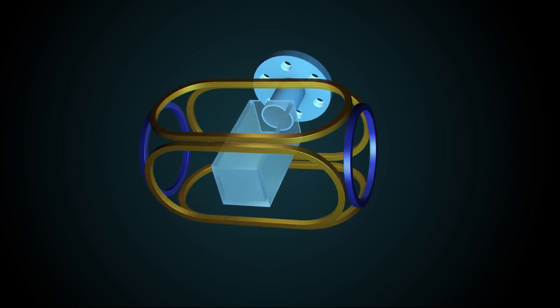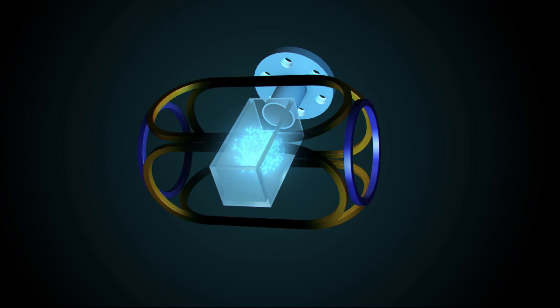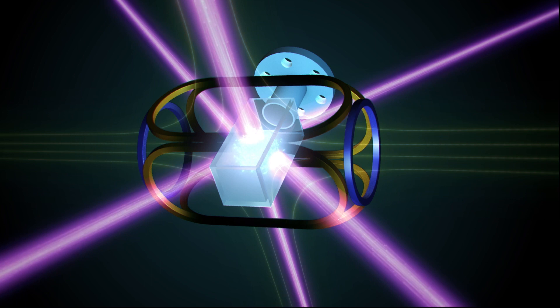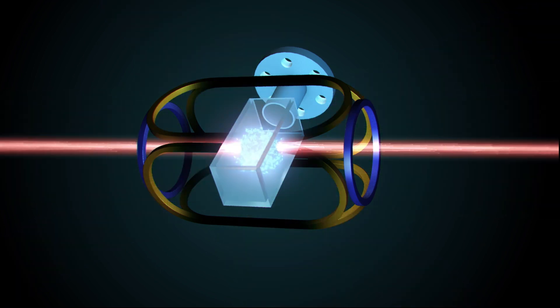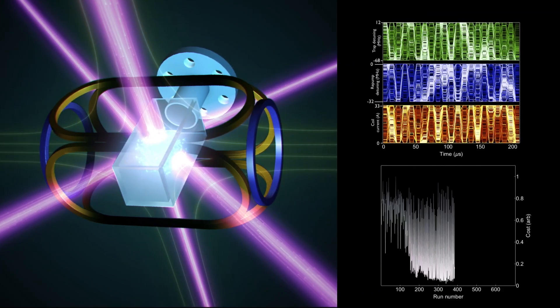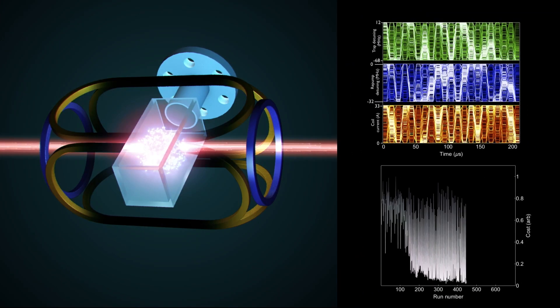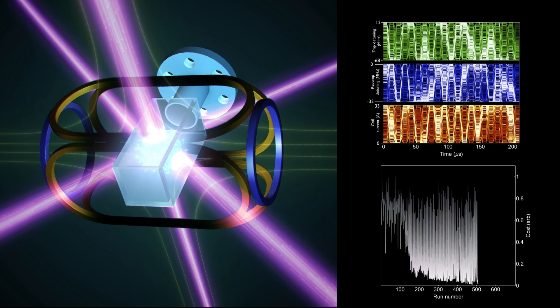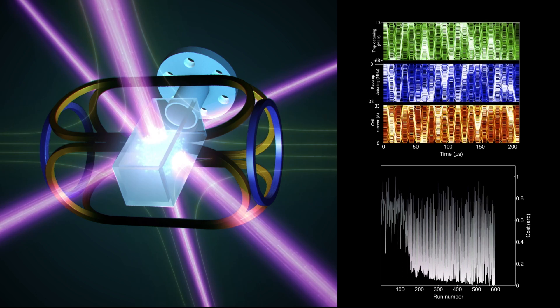Along the way to maximizing the number of atoms in our magneto-optical trap, we've developed a machine learning system that is capable of tuning the performance of a complex system in real time. By handing control of the laser and magnetic fields to a computer, we're able to catch and cool twice the number of atoms in half the time compared with the best human effort.